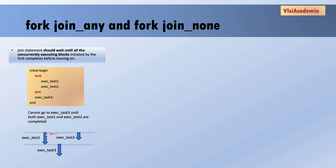Consider that execute_test_one takes more time and execute_test_two completes earlier. Because of the join statement, we can only move to execute_task_three when both test one and test two are completed, so task three starts after test one completes. But since test two completed earlier, suppose we want to start task three as soon as at least one test has completed — this is done using join any.